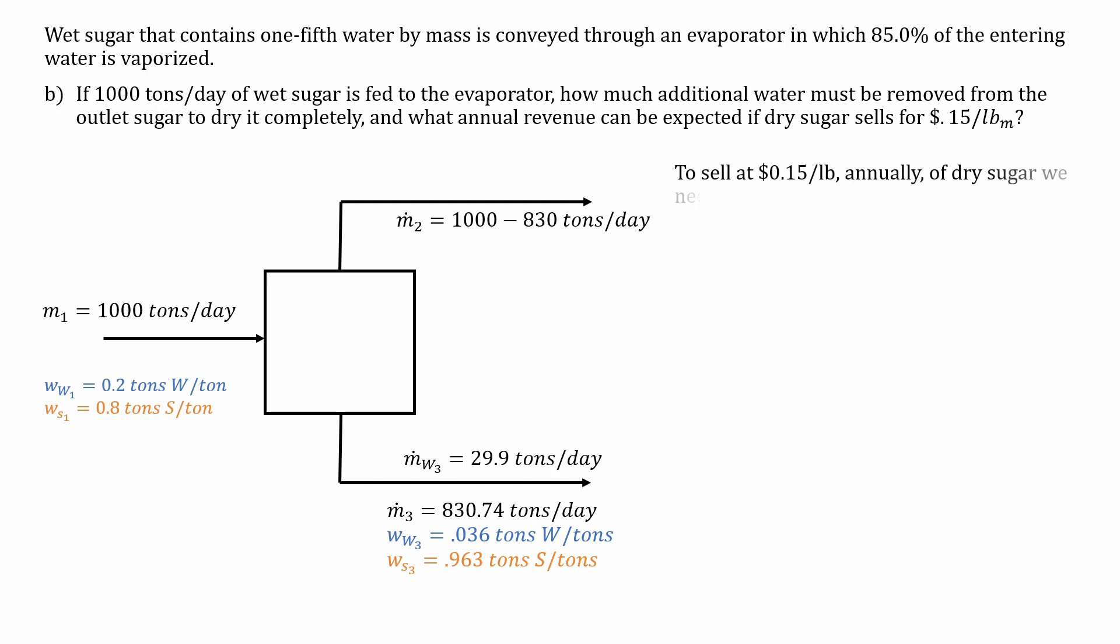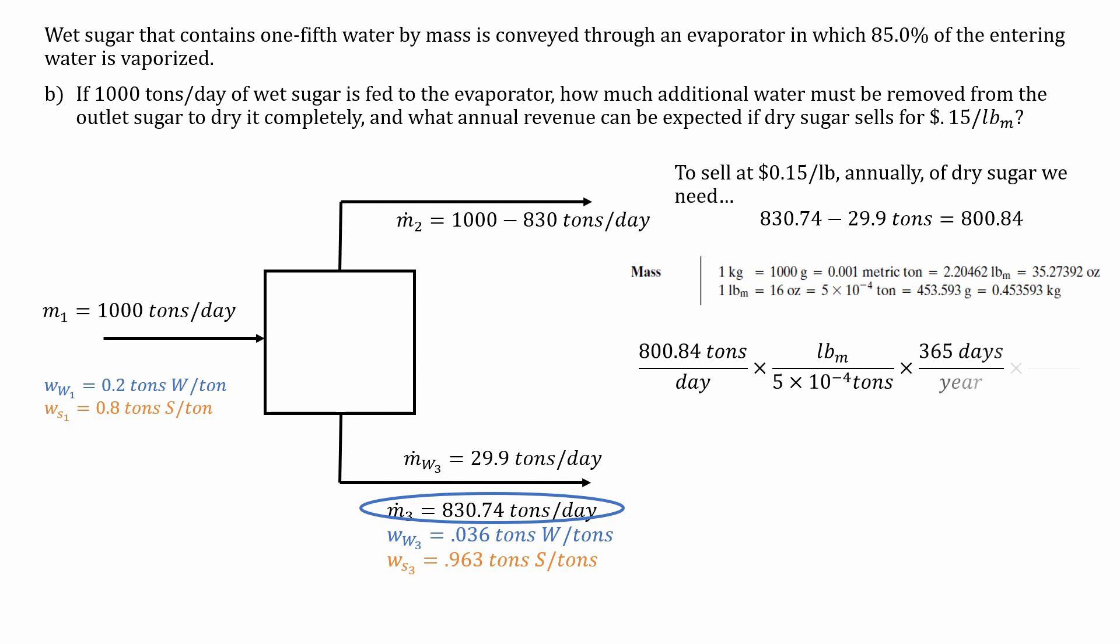Now to sell at 15 cents per pound annually of dry sugar we need, so we convert the value of the third stream. And using some unit conversions, we get about 87 million dollars per year. And now we're done with part B.